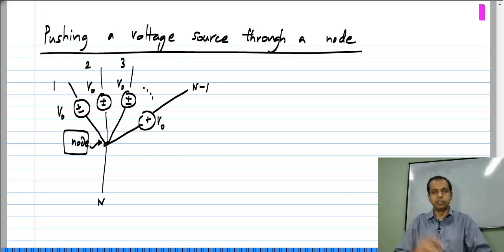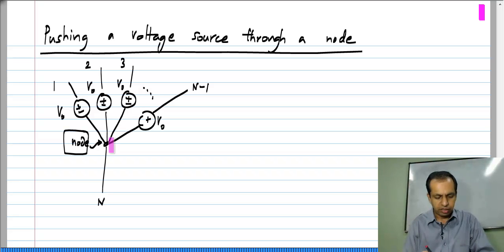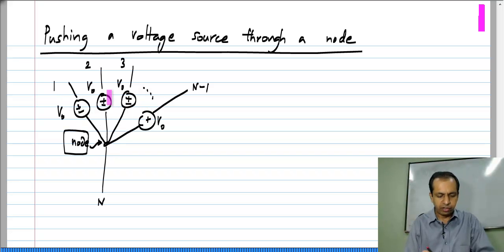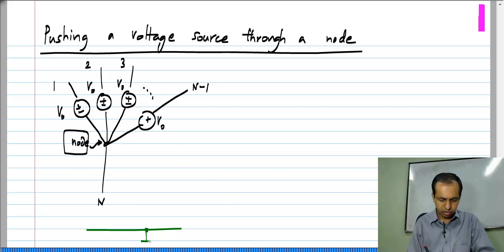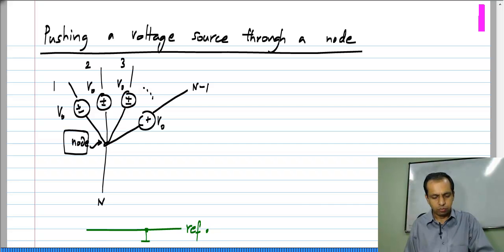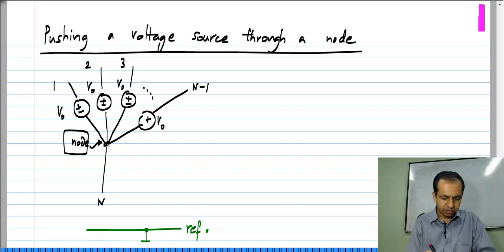This is a contrived situation used to illustrate the point. We have n branches connected to the node, in n minus one of them we have identical voltage sources in the same direction, and the nth one can be arbitrary. Let us say we have some reference node with respect to which we measure all the node voltages, and let us say the voltage at this node is some Vₙ.